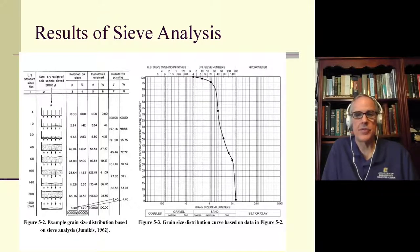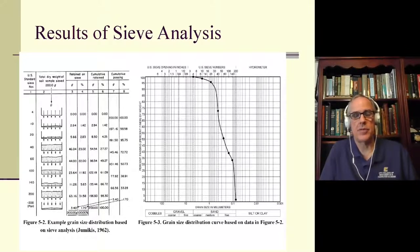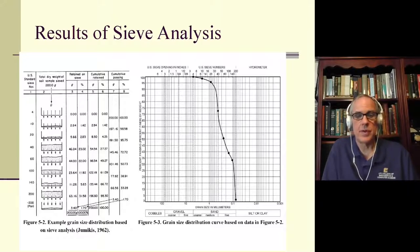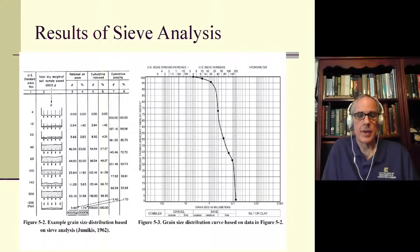The percentage of the total weight for each sieve is simply the weight retained divided by the original 200 grams. So 2.84 grams is 1.42%, 5.66 is 2.83%, 46.04 is 23.02%, and so on. That's how we get the retained-on-sieve columns — grams from the lab, and percent as each weight divided by the total expressed as a percentage. Only 3.4 grams of soil hit the pan, or 1.70% of the entire weight.